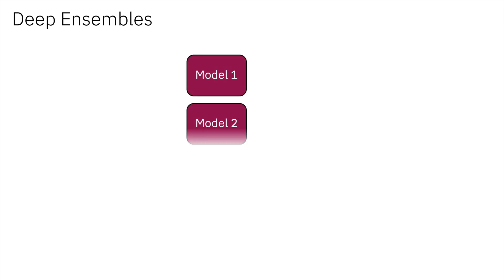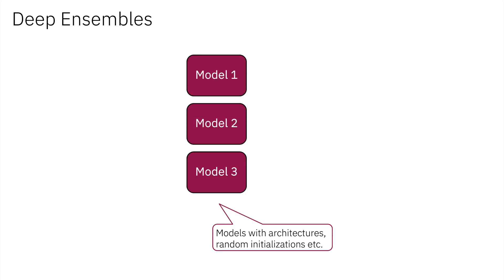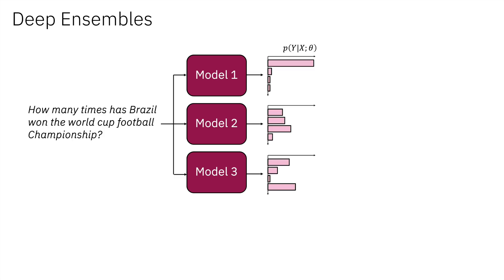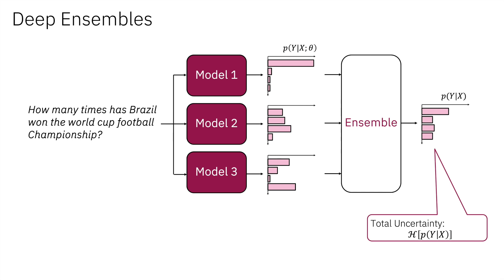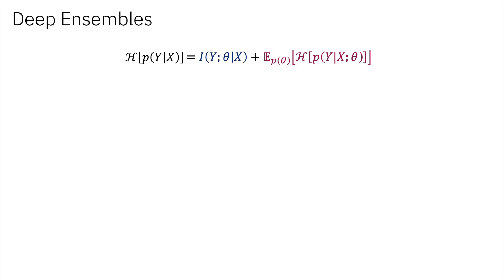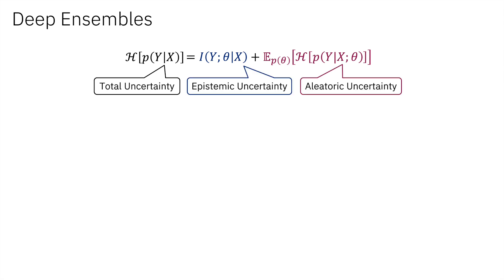Deep ensembles is a simple yet effective uncertainty decomposition approach. It requires that we train multiple models on the same training set, each with different architectures, random initializations, etc. The same input question is fed into all the models, each producing an output distribution. These distributions are aggregated to produce the final output distribution. The total uncertainty is measured as the entropy of the final output distribution. From information theory basics, the total entropy can be connected with the individual model's output distribution via a decomposition identity.